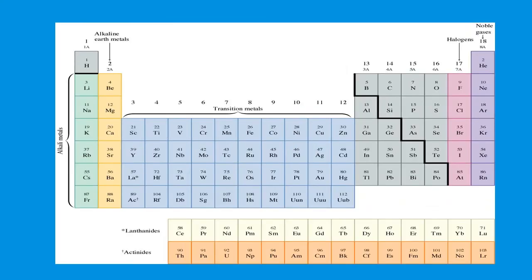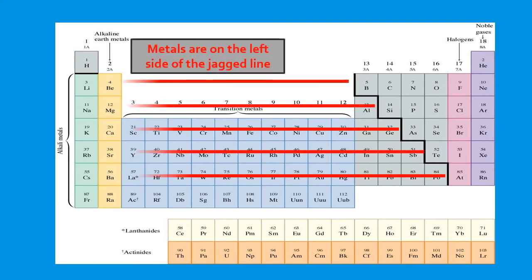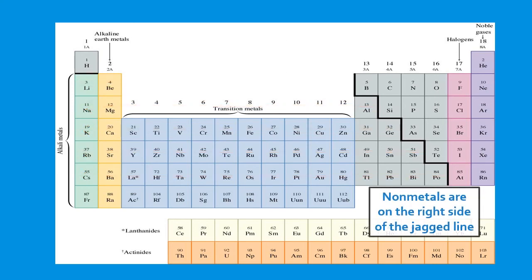The dark jagged line on the periodic table separates the periodic table into two sections. This is our dark jagged line here. So it separates it into two sections, or we see two types of elements: metals and non-metals. Elements to the left of the jagged line are metals, and the non-metals are found on the right side of the jagged line. So again, all elements to the left of the jagged line will be metals and all elements to the right will be non-metals.